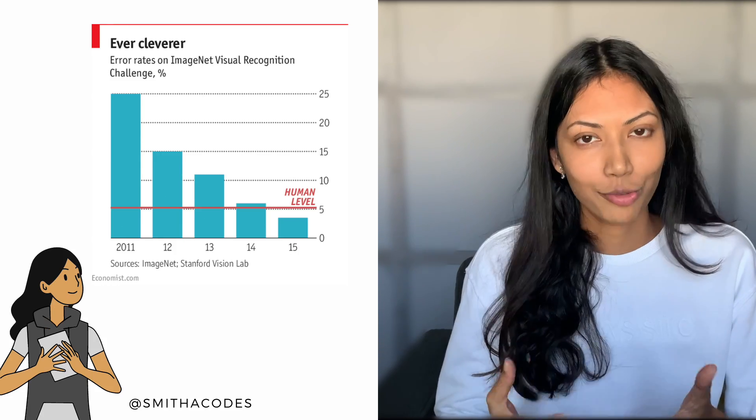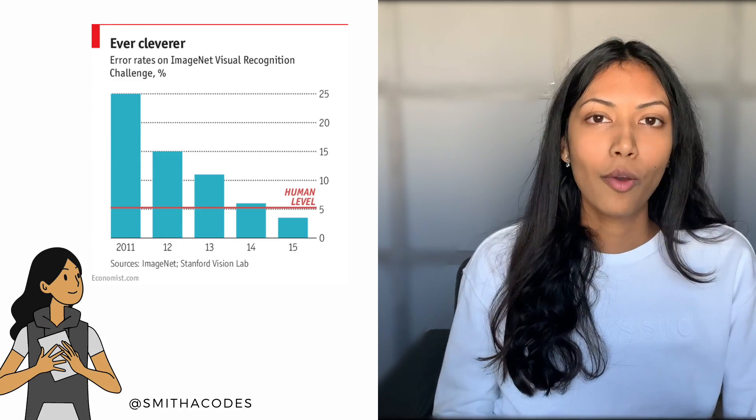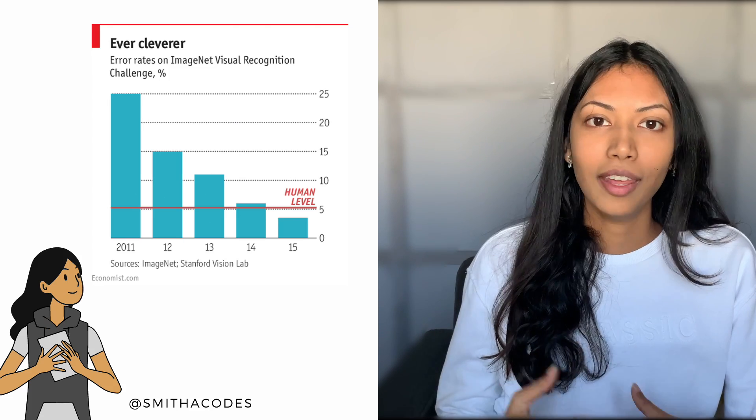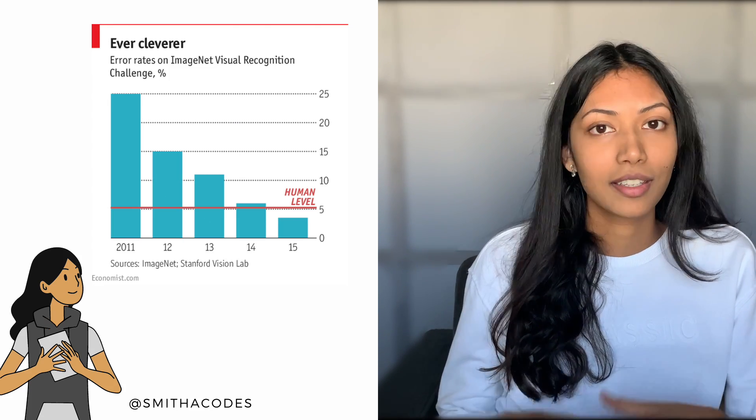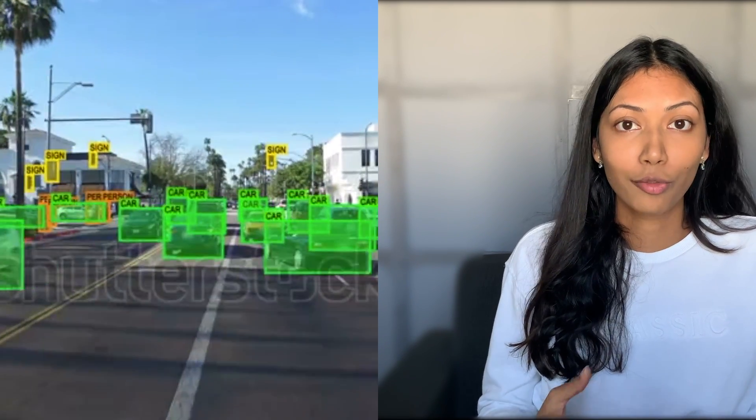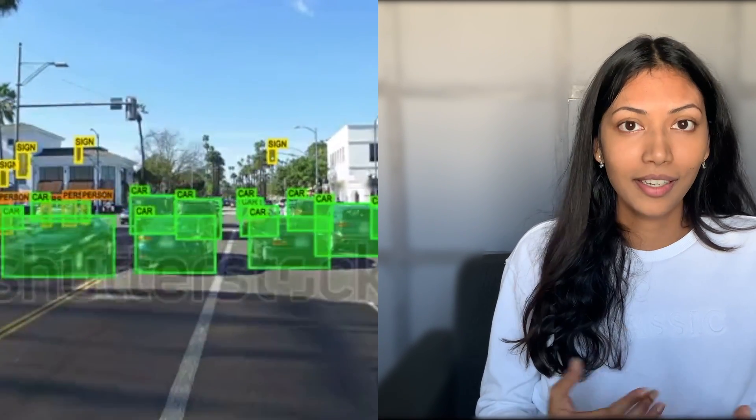To better understand this concept of learning, it's really useful to look at an example like image recognition, where machine learning has made great strides and is even better than humans. Image recognition refers to a computer or software's ability at identifying objects in images.